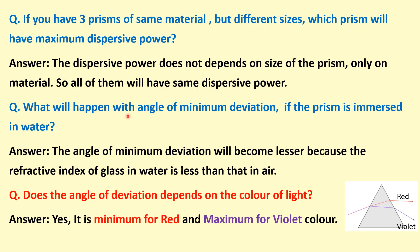What will happen to the angle of minimum deviation if the prism is immersed in water? The angle of minimum deviation will become less because the refractive index of glass in water is less than that in air.